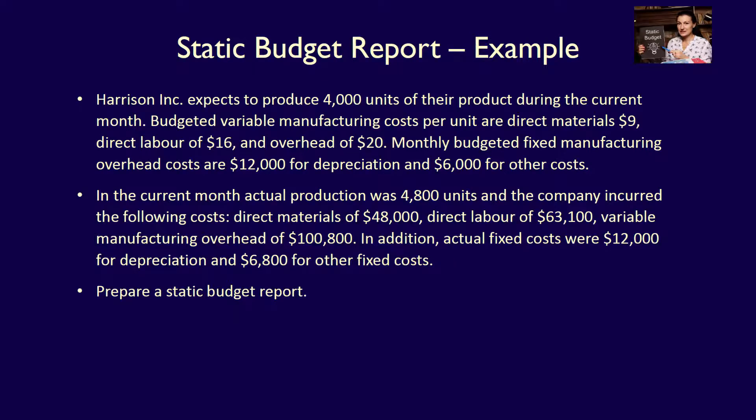Harrison Inc. expects to produce 4,000 units of their product during January. Budgeted variable manufacturing costs per unit are: direct materials $9, direct labor $16, and overhead $20. Monthly budgeted fixed manufacturing overhead costs are $12,000 for depreciation and $6,000 for other costs. In the current month, actual production was 4,800 units, and the company incurred the following costs: direct materials $48,000, direct labor $63,100, variable manufacturing overhead $100,800. Actual fixed costs were $12,000 for depreciation and $6,800 for other fixed costs. Prepare a static budget report.